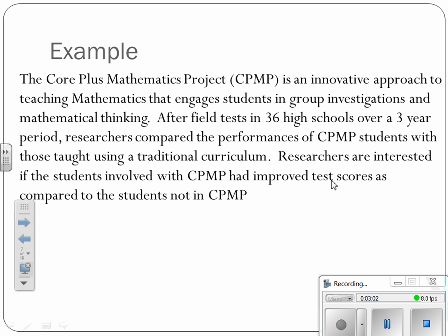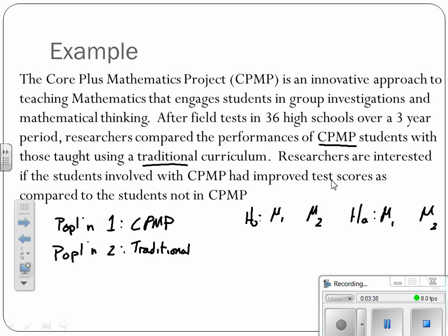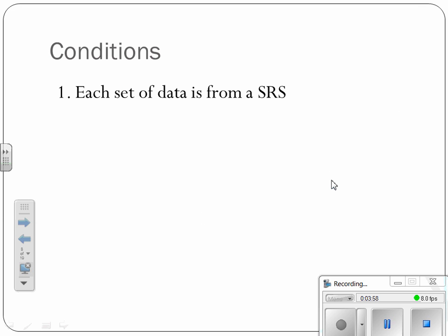One more example here. So this common core is an innovative approach to teaching math. So they do a field test in 36 high schools over a three year period. And they're going to compare performances to common core with traditional. So population one will be CPMP. Population two will be traditional. And then we've got HO. We're going to compare two means. And then HA, again comparing two means. And this time researchers are interested if there was improvement with CPMP. So in other words, will population one be greater than population two in this case? And the null here can just be that there is no difference between the two curriculums.